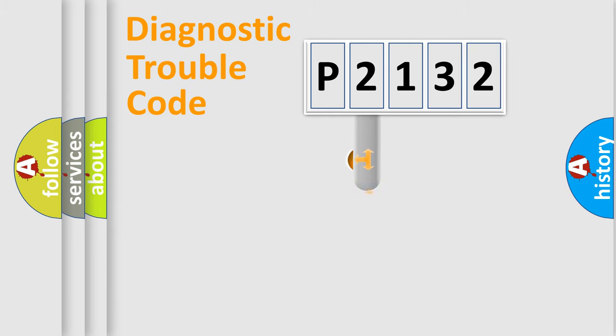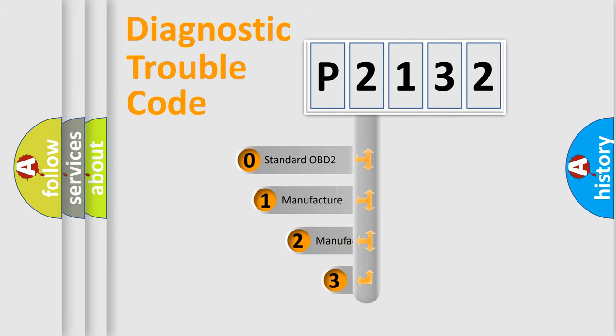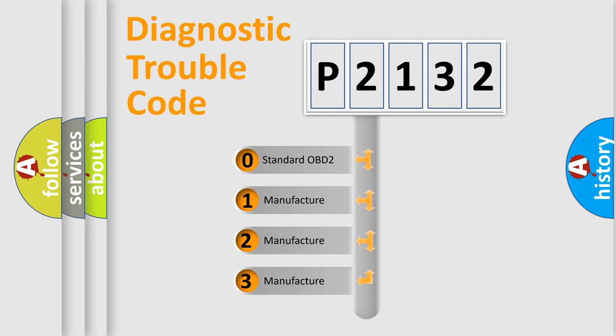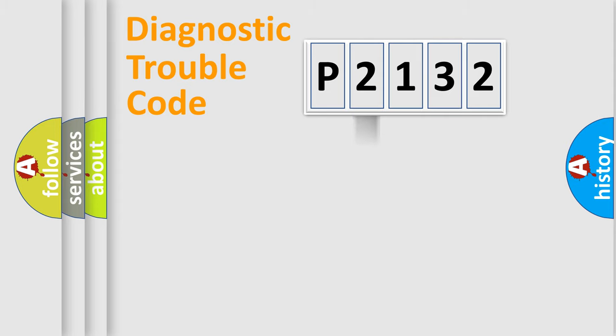This distribution is defined in the first character code. If the second character is expressed as zero, it is a standardized error. In the case of numbers 1, 2, or 3, it is a manufacturer-specific expression of the car-specific error.